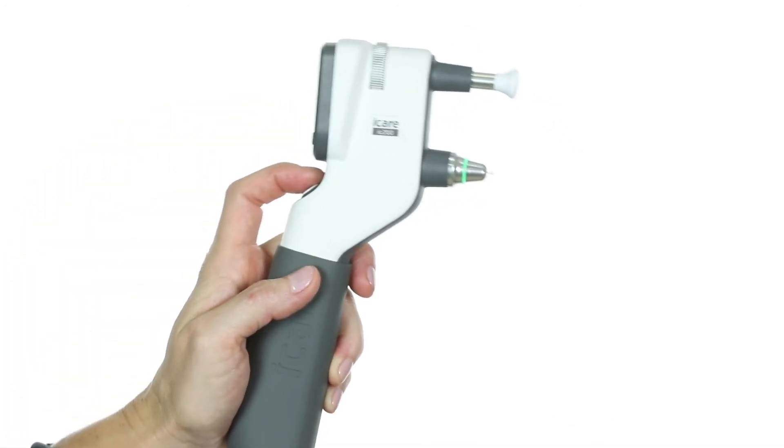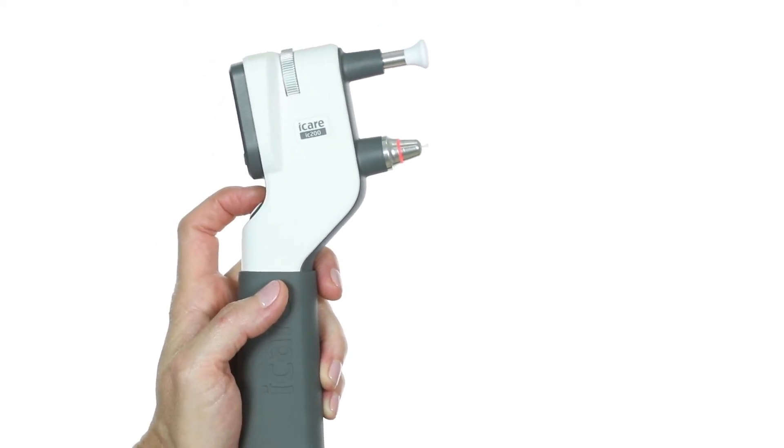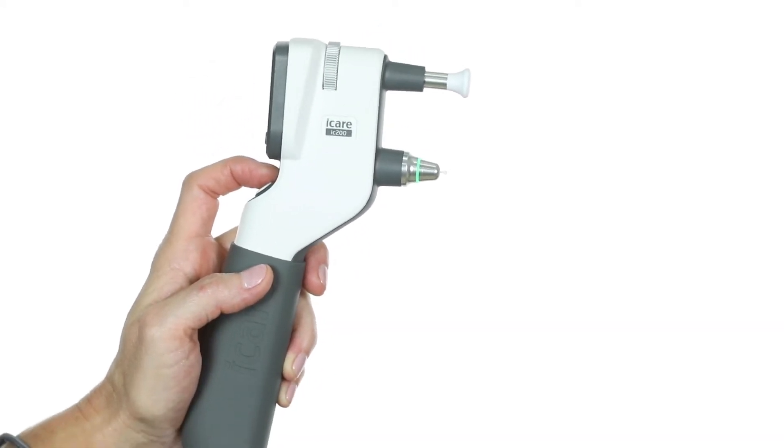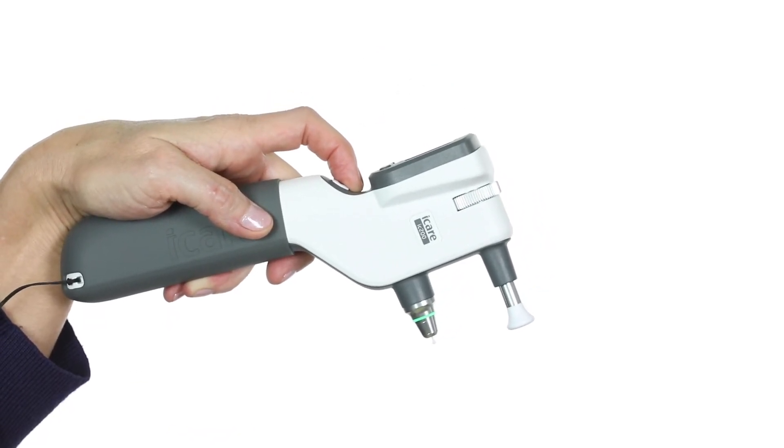If the probe base light is red, the device is tilted too far upward. The green probe base light indicates proper alignment when taking a measurement in sitting, supine, or any position in between.